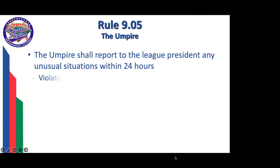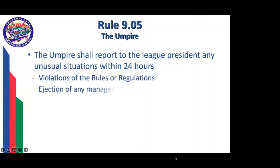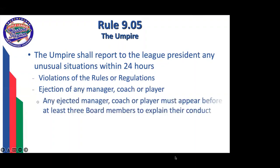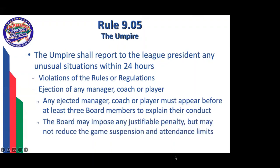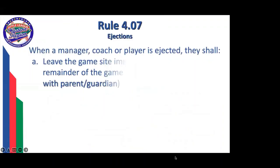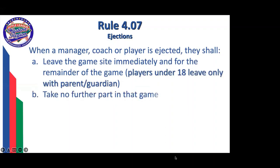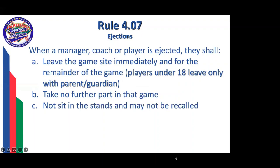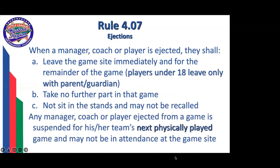Umpires must keep the board of directors and league officers informed. Within 24 hours, file a formal written report with the league president for any unusual situations, including a violation of rules or regulations, ejection of any manager, player, or coach, or any other incident worthy of comment. If there's an ejection, the manager or coach must leave the game site immediately for the remainder of the game. An ejected player under 18 may only leave with a parent or guardian — if no guardian is present, place the player in the dugout where they're protected.